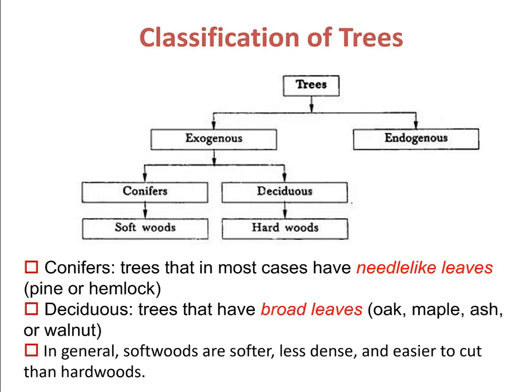In most cases, conifers have needle-like leaves — for example, pine or hemlock. Deciduous trees have broad leaves — for example, oak, maple, ash, or walnut. Deciduous trees and conifers produce hardwoods and softwoods respectively. These terms are classifications within the tree family and are not a description of the wood's actual hardness characteristics. In general, softwoods are softer, less dense, and easier to cut than hardwoods. Hardwoods normally have a more complicated cell structure, however exceptions exist — such as balsa, which is a very soft and lightweight wood but is classified as hardwood.